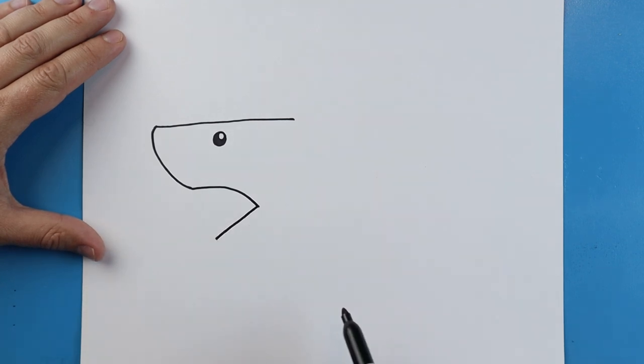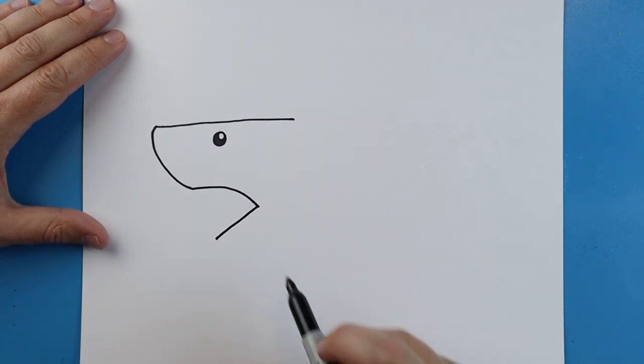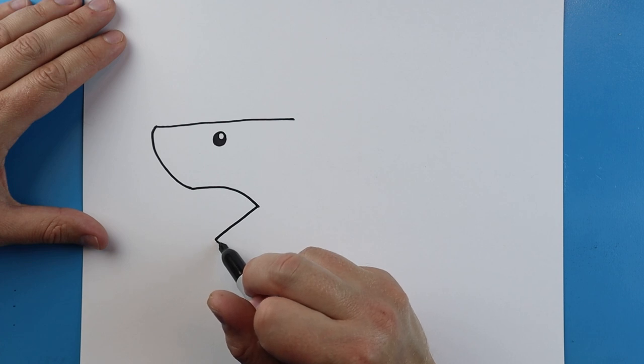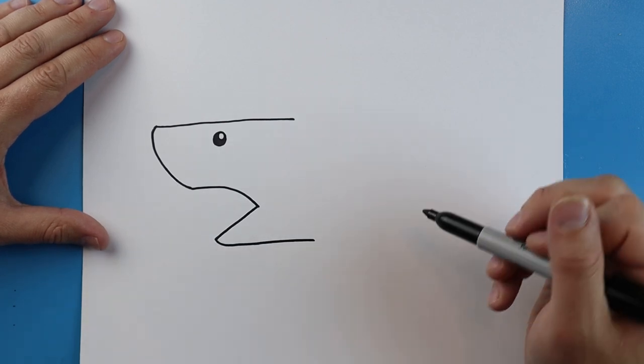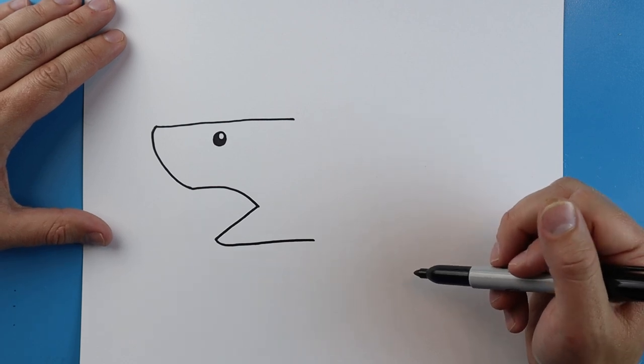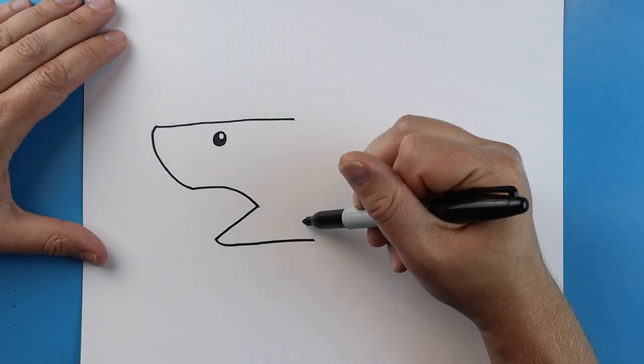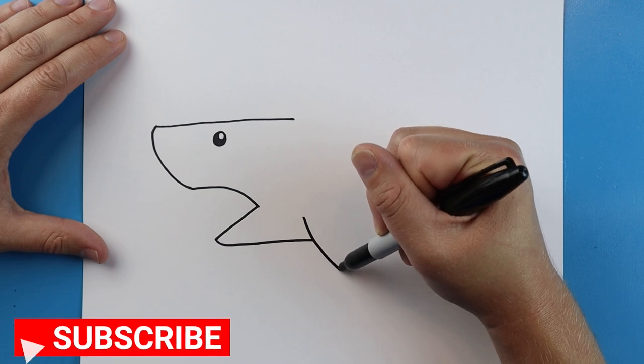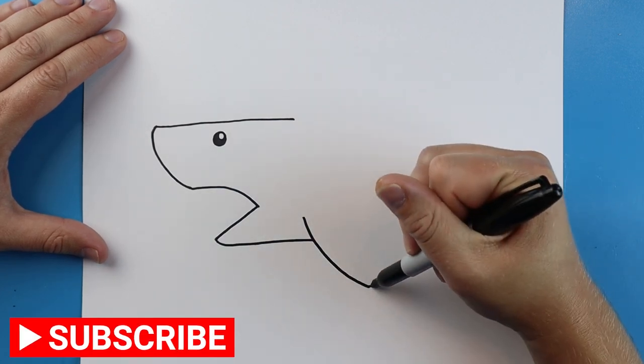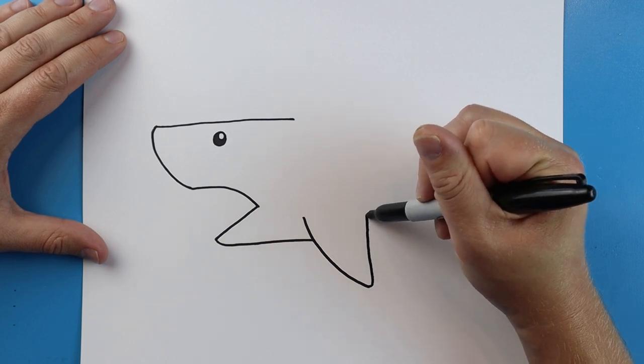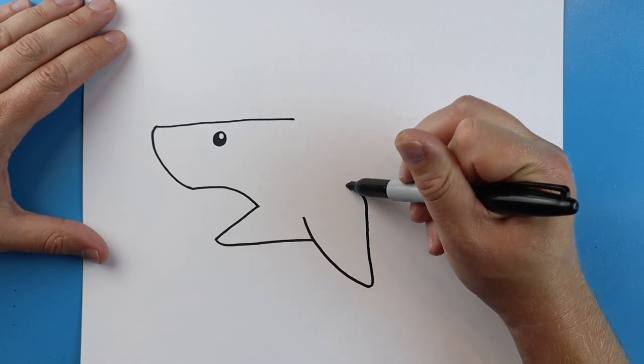Next I'll draw a line that comes down at an angle. Then I'm going to take this line, put a little curve, and then bring it straight over. Right here I'm going to draw a line that's going to curve down. Then we're going to bring it up like this and bring it in.